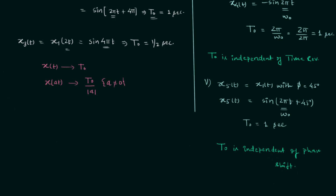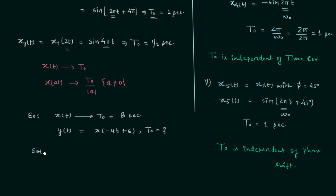Now we will solve one example using what we have learned. There is a signal x(t) whose fundamental time period is t₀ = 8 seconds. There is another signal y(t) = x(−4t + 6), and we need to find the fundamental time period of y(t). We begin by performing time shifting: x(t+6) has no effect on the fundamental time period, so x(t+6) will have the same FTP as x(t) — that is, 8 seconds.